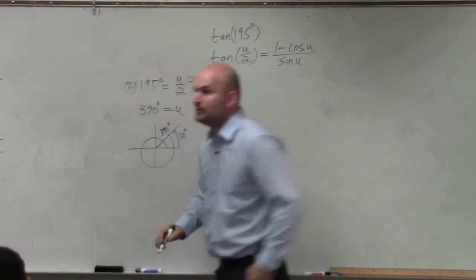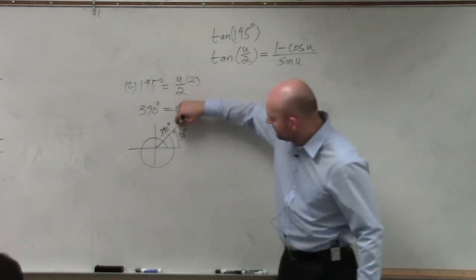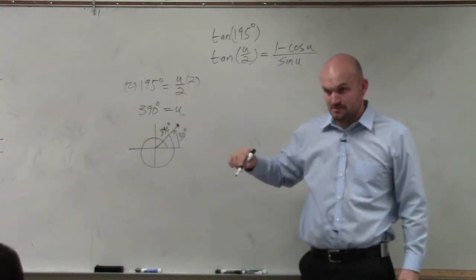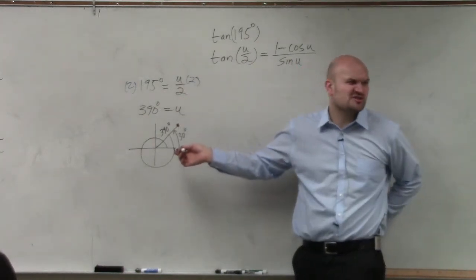30, so 390 degrees and 30 degrees give you the same coordinate points on the unit circle. Would you guys agree? But it's a little bit easier to just use 30 degrees than 390.